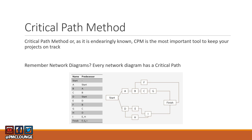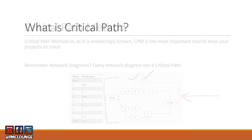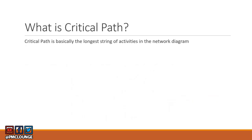Let me show you how a network diagram looks. Every single network diagram out there is going to have a critical path, so yes, this one also has a critical path. What is the critical path? That is what we are going to look into. It is basically the longest string of activities in the network diagram.